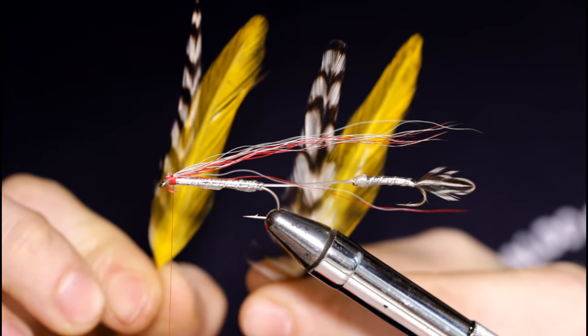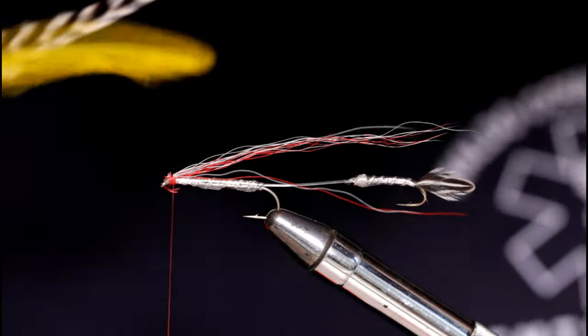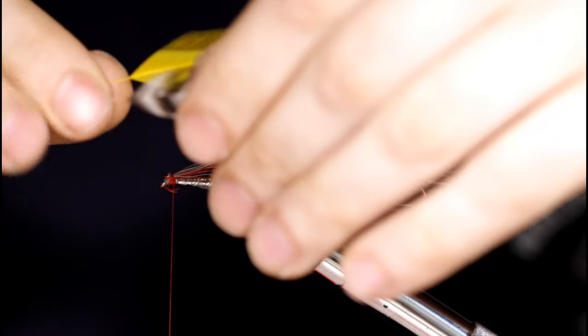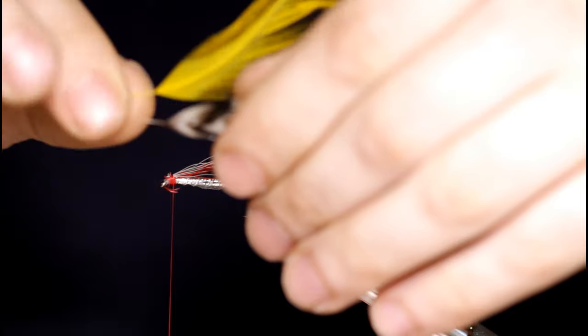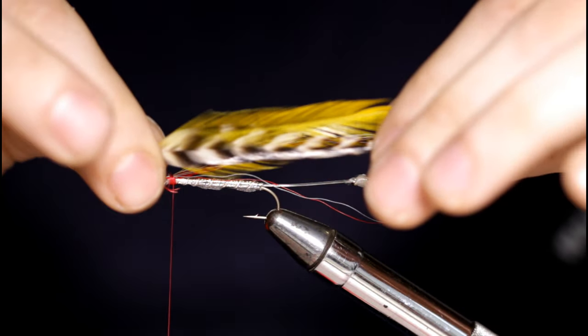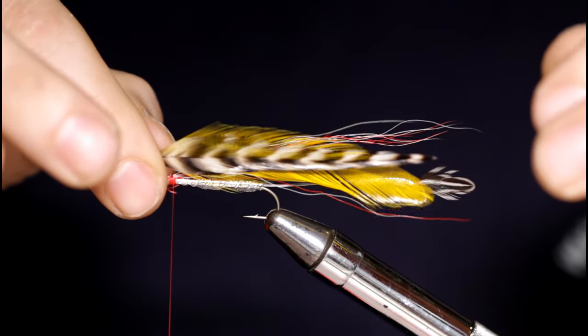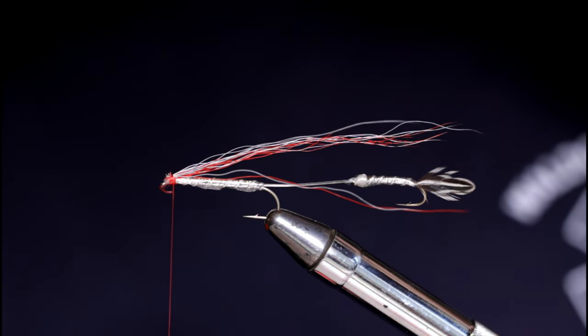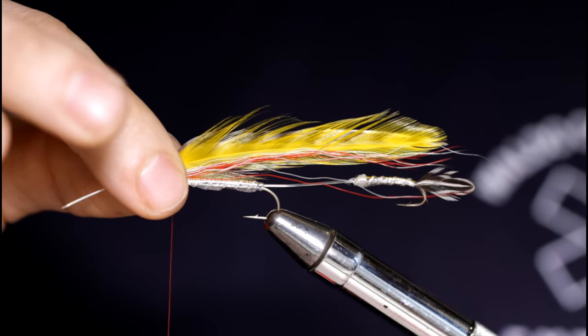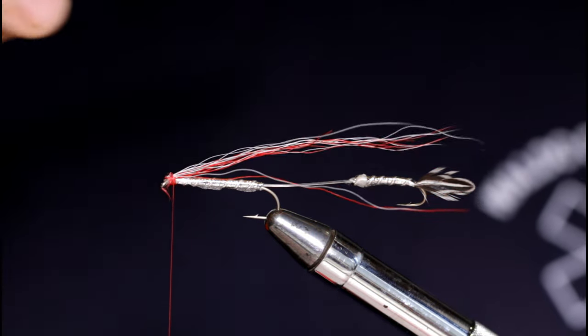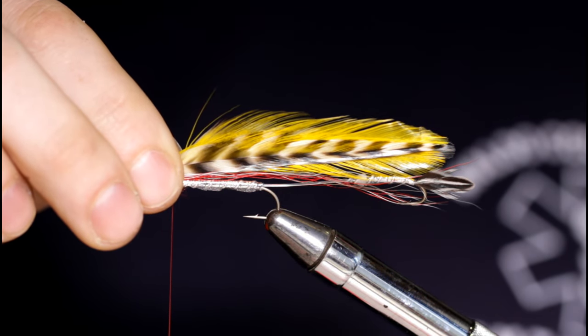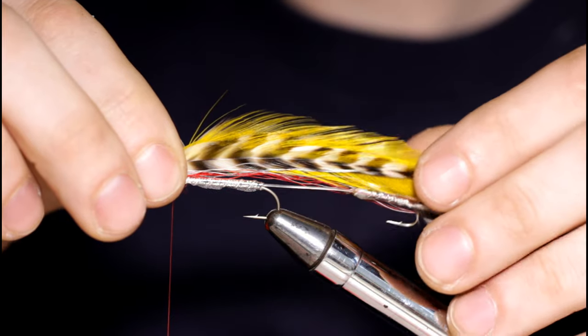Now it's time to form the wing. I've got two yellow saddle hackles and two grizzly saddle hackles. The yellow will go down first and the grizzly hackle will go down over that. It'll look something like this. So now I'll do my other side. I've got a yellow and a grizzly hackle paired up. And here's all four of them together, set on top. This is about what the wing should look like when it's finished.